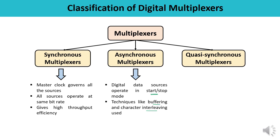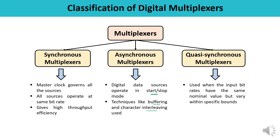The third category is quasi-synchronous multiplexers. These multiplexers are used when the input bit rates have the same nominal value but vary within specific bounds — there is variation, but within a certain range. These multiplexers are arranged in a hierarchy of increasing bit rates to constitute basic building blocks of an interconnected digital telecommunication system. This is how, based on different data rates, their variation, and the manner in which they are treated, digital multiplexers are classified into three categories. Thank you so much for watching this video.